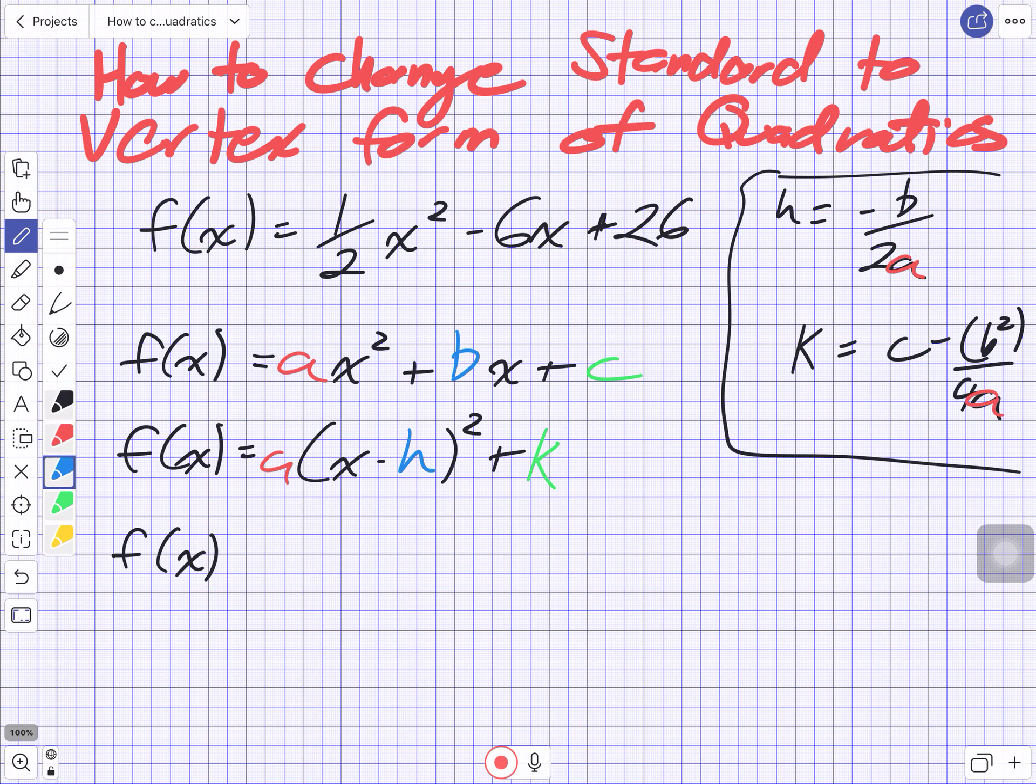And you can technically use these, plug the values of a, b, c, so like a half, negative 6, and positive 26, plug them all in here, get your h and k. Technically your a's the same, and you can build it. But I think in your case your teacher wants you to do completing the square. So you can just keep these in mind as ways to check. You should get the same answer by completing the square and doing this. So we can use these as checking mechanisms.